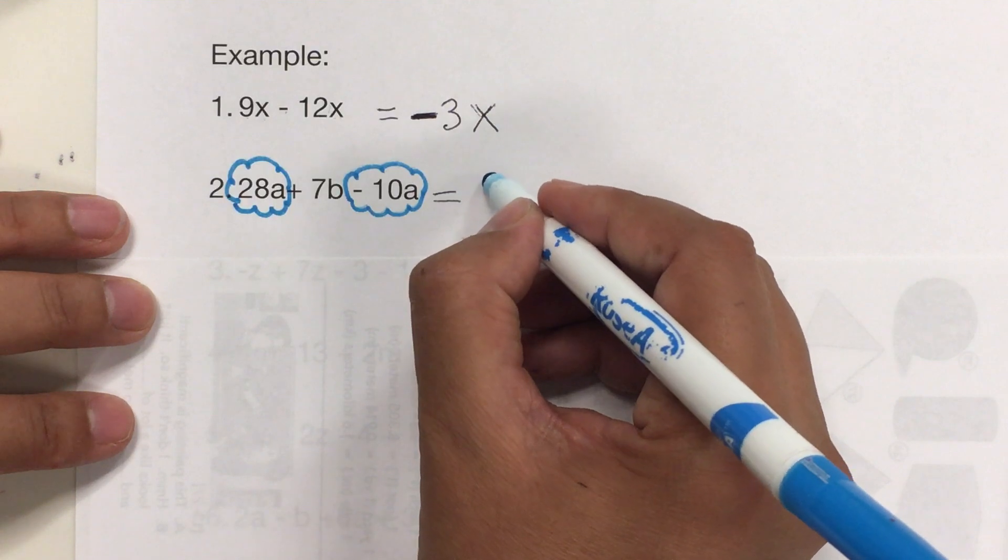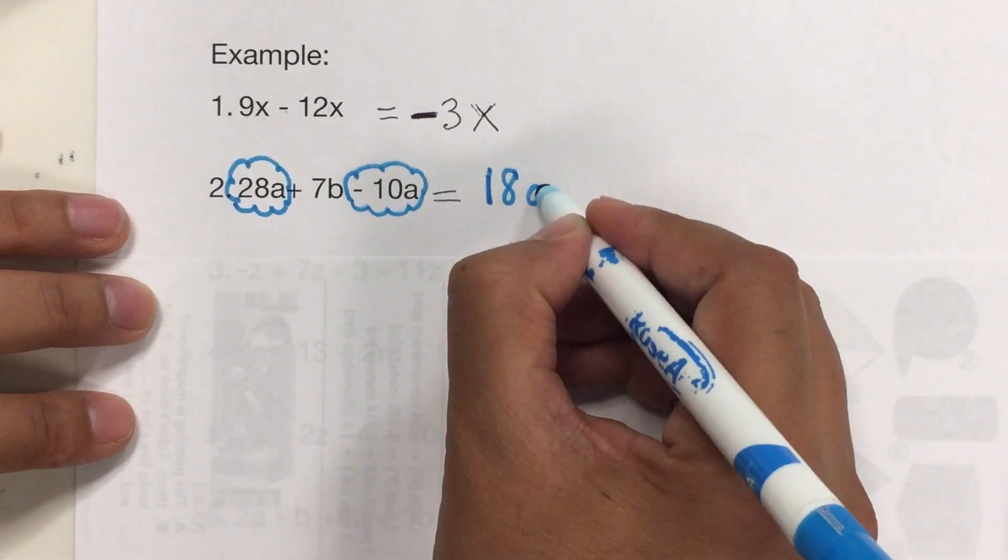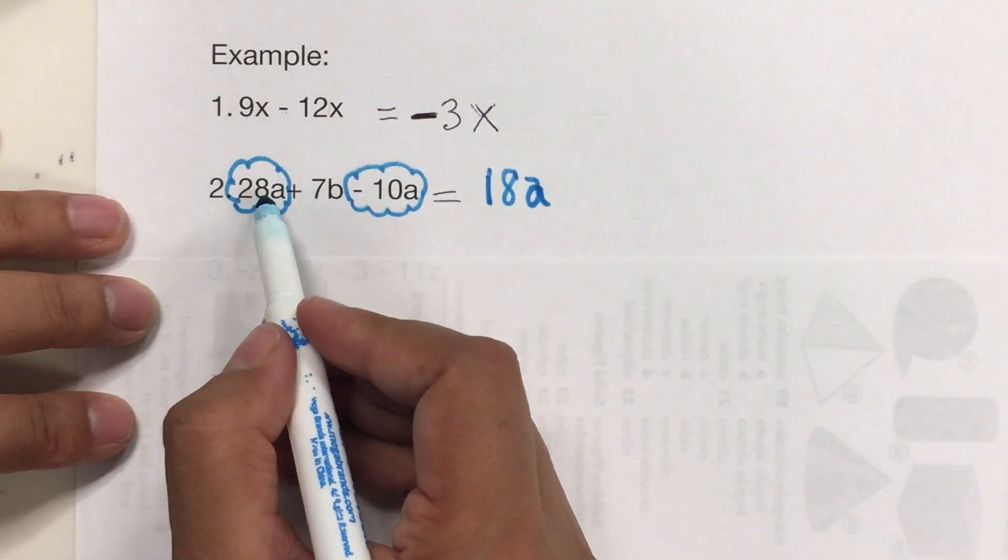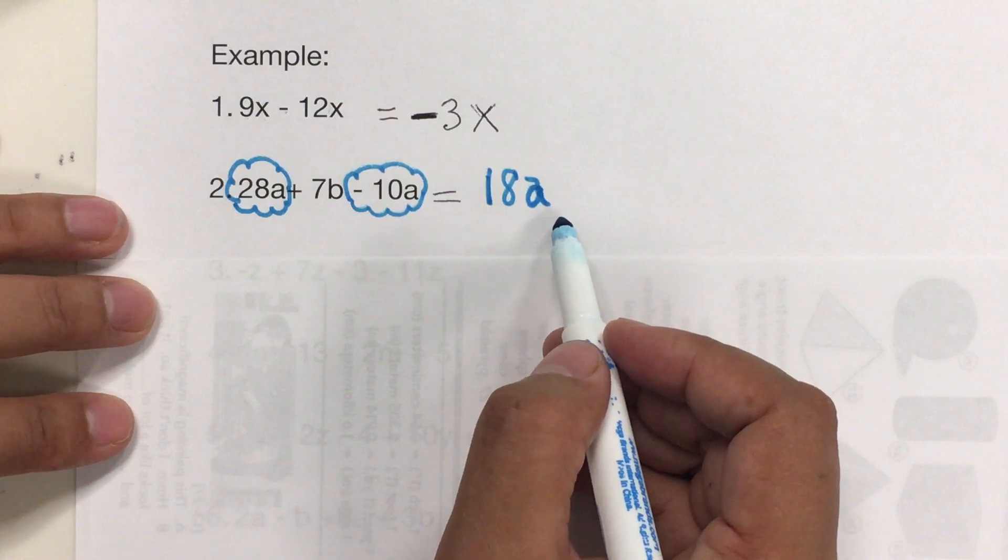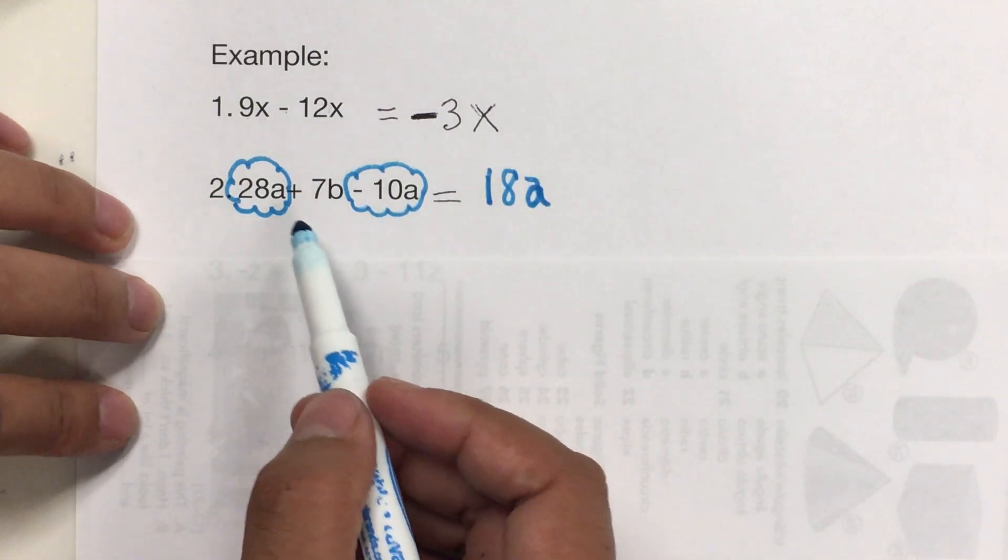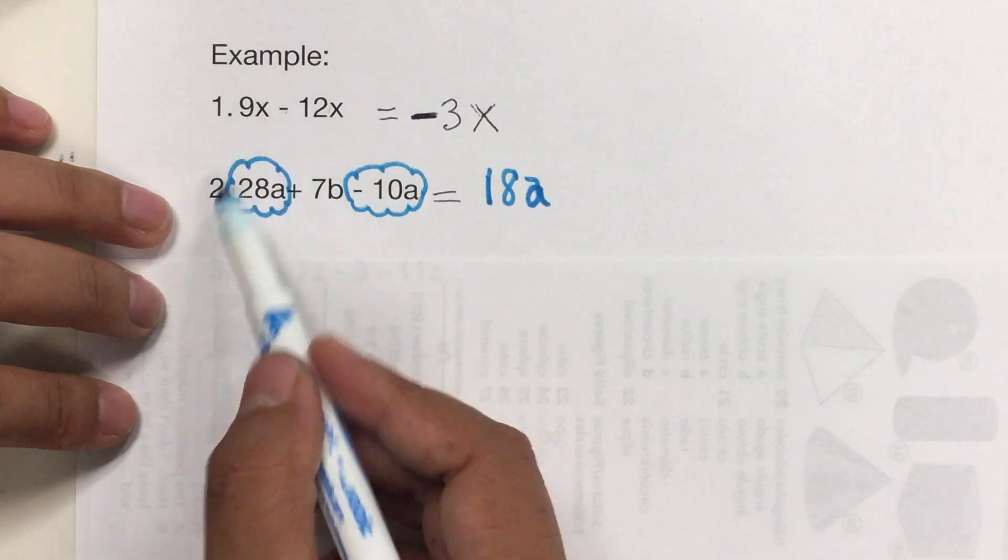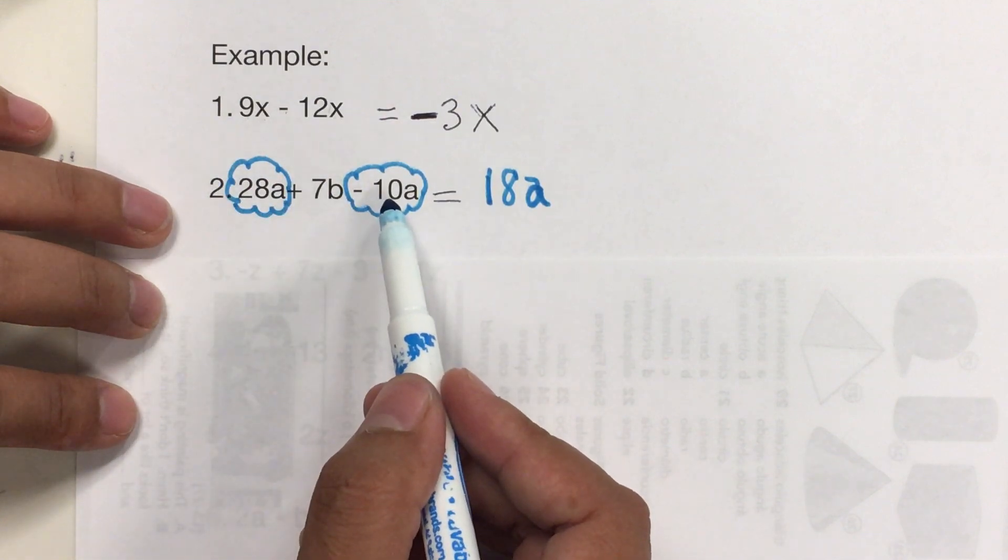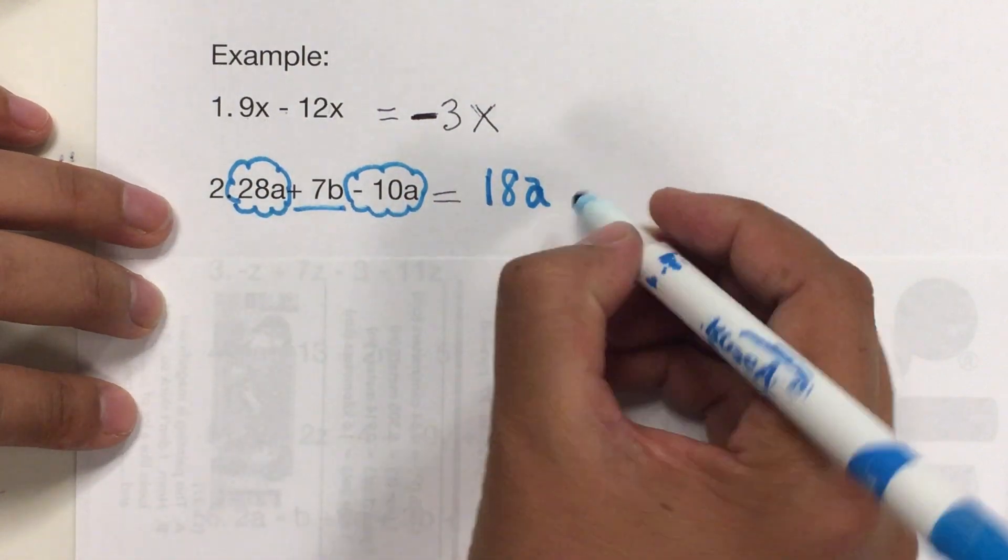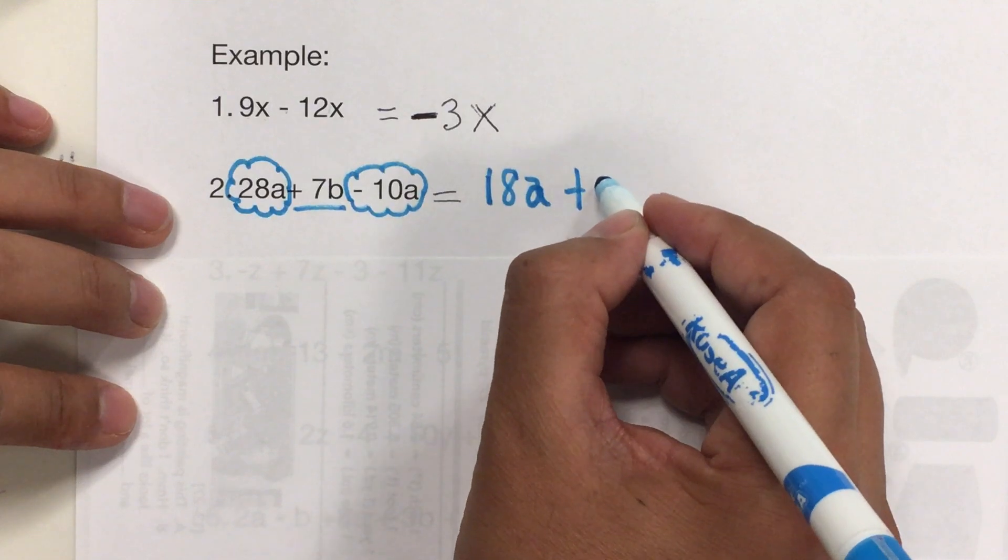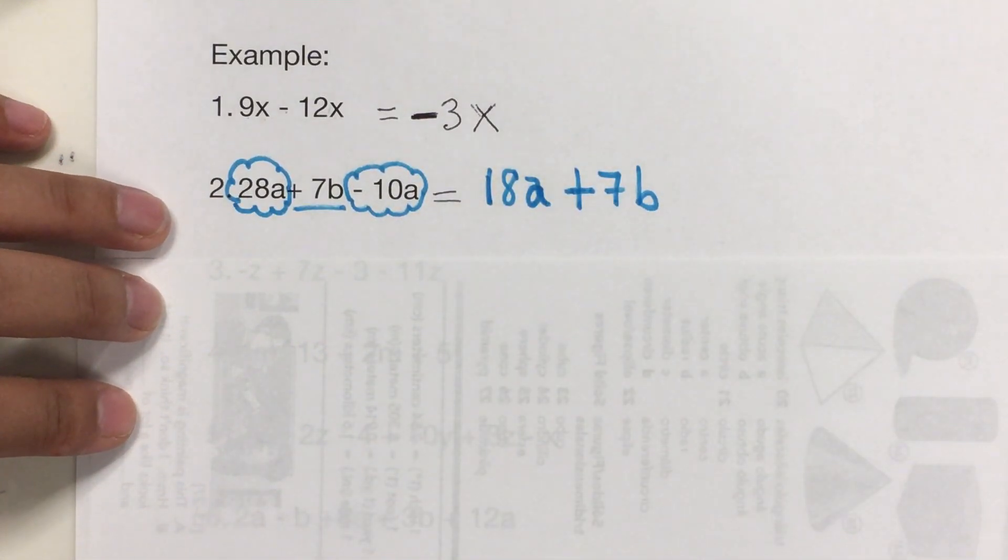So, that means that I owe 18, I mean I have 18a left. Or, if you want the rule, signos diferentes se restan y se queda el signo del mayor. So, 28 minus 10 is 18, and the biggest one is positive. And this is just alone, so we just put plus 7b. And that's the answer.